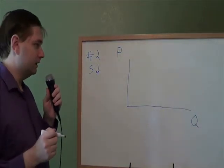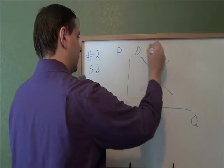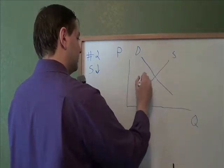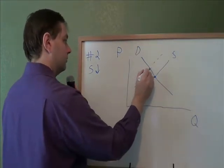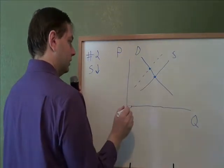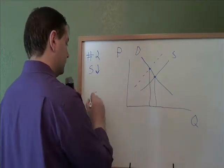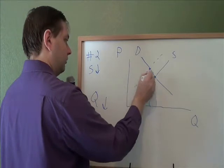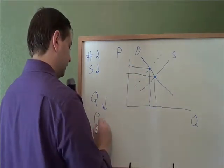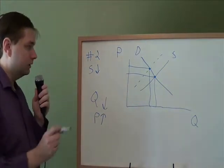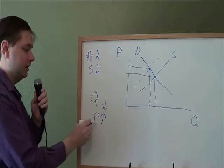Question two: what happens when supply decreases? A decrease in supply means it moves to the left. We've changed from an equilibrium here to an equilibrium there. The equilibrium moved to the left, so quantity decreased. And the price moved up, so the price increased. A decrease in supply causes a decrease in equilibrium quantity and an increase in equilibrium price.